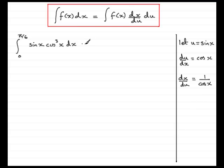We need to write in our f(x), which will be sin x cos cubed x. And then in place of dx/du, it'll be 1 over cos x. All of this is integrated with respect to u.